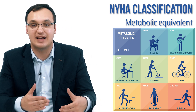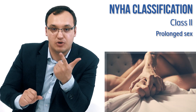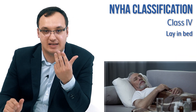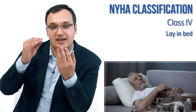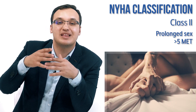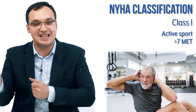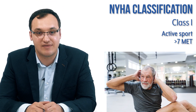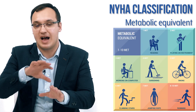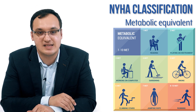Metabolic equivalents allow us to group certain activities scientifically. When you have sex for a longer time, you have a MET of more than 5. When you take a shower, more than 2. When you do sports like skiing, more than 7. When you lay in bed, less than 2. There are many lists online where you can check what activities correspond to each MET level.